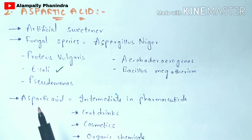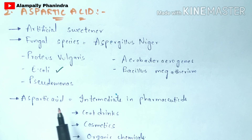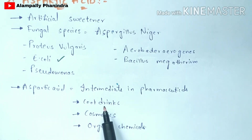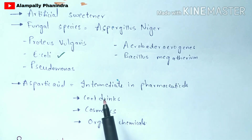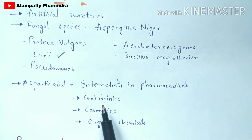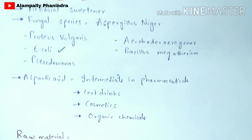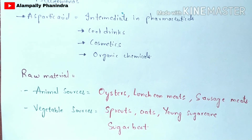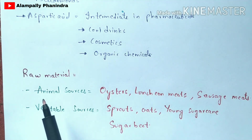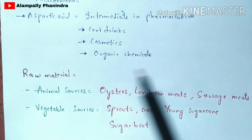The main uses of aspartic acid include its use as an intermediate in pharmaceuticals, as a sweetener in cool drinks to provide sweet taste, and in cosmetics for preventing hair fall and promoting hair growth. It is also used for the production of organic chemicals. Raw materials for aspartic acid include animal sources and vegetable sources.